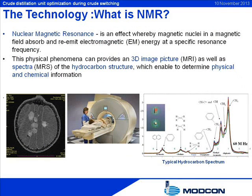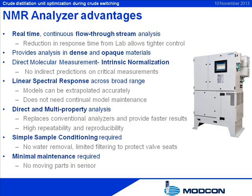Nuclear magnetic resonance is an effect whereby magnetic nuclei in a magnetic field absorb and re-emit electromagnetic energy at a specific resonance frequency. This physical phenomenon can provide a 3D image picture as well as a spectra of the hydrocarbon structure, which enables determination of physical and chemical information. NMR technology advantages include: real-time continuous flow-through stream analysis, analysis in dense and opaque materials, direct molecular measurement, intrinsic normalization, linear spectral response across a broad range, direct and multi-property analysis, simple sample conditioning required, and minimal maintenance required.